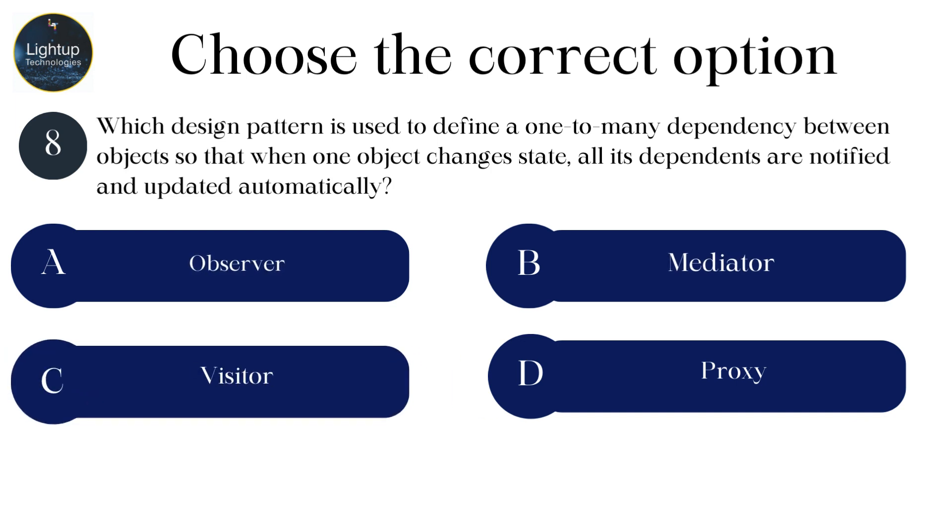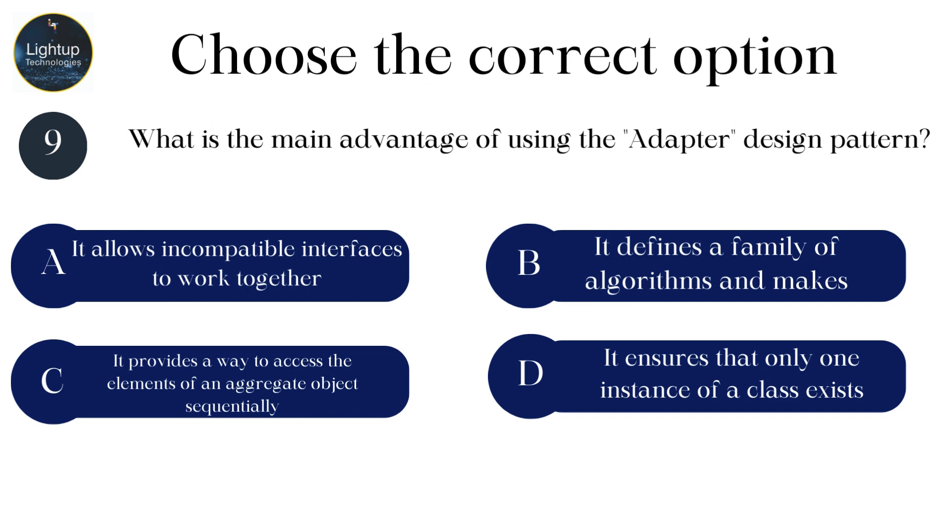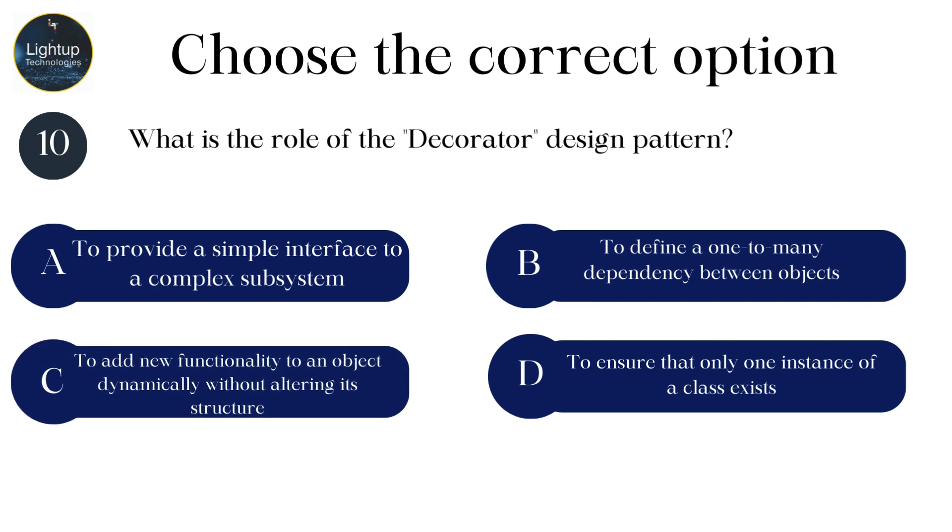Which design pattern is used to define a one-to-many dependency between objects so that when one object changes state, all its dependents are notified and updated automatically? What is the main advantage of using the adapter design pattern? What is the role of the decorator design pattern?